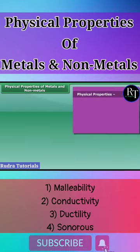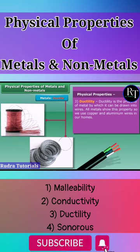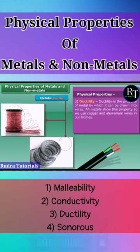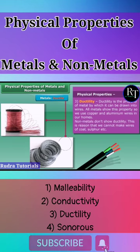The property of metal by which it can be drawn into wires is called ductility. It is the third property of metals. Non-metals don't show ductility.